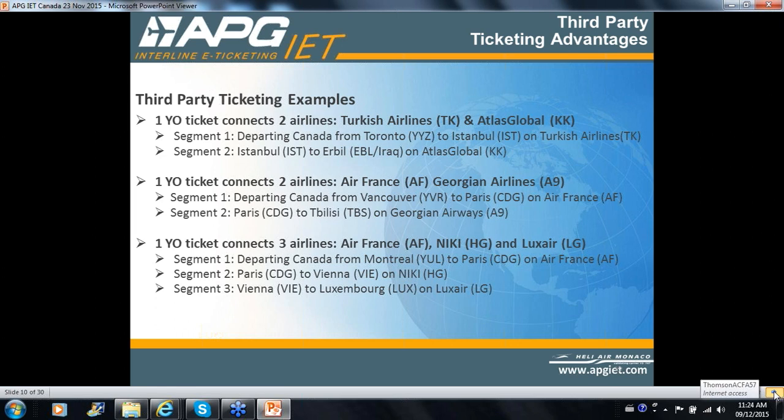Let's take a look at a scenario involving three carriers with three different segments. You've got Air France, NIKI from Austria, and Luxair. Using this example: Montreal to Paris on Air France, Paris to Vienna on NIKI or Lauda Airlines, and then a third segment heading back within 24 hours — all on the same ticket, priced and ticketed on one document — with Luxair. That can also be done on one YO ticket.